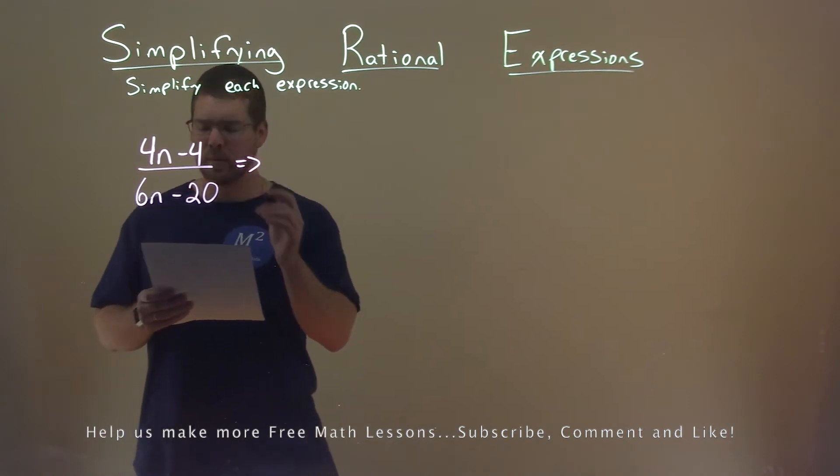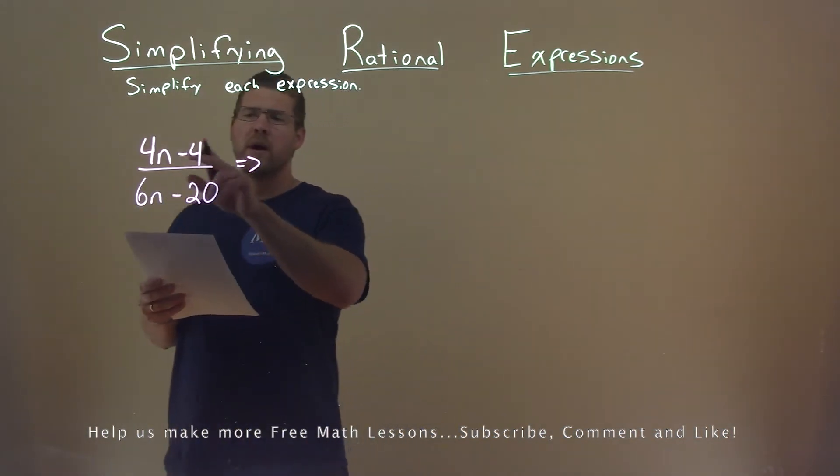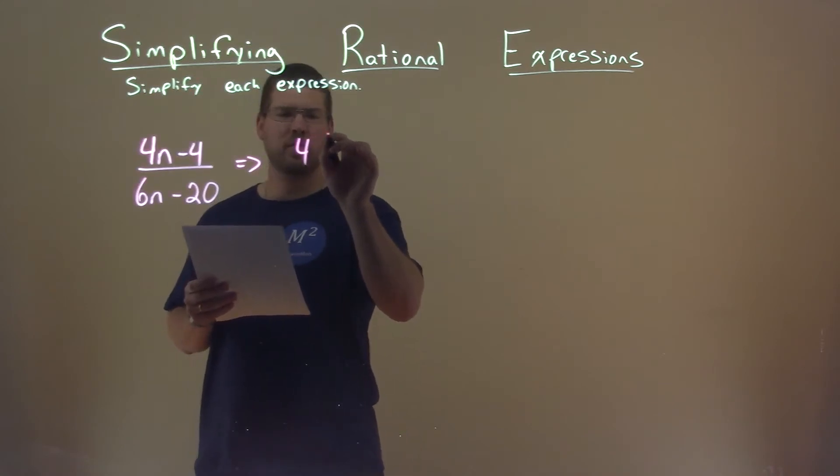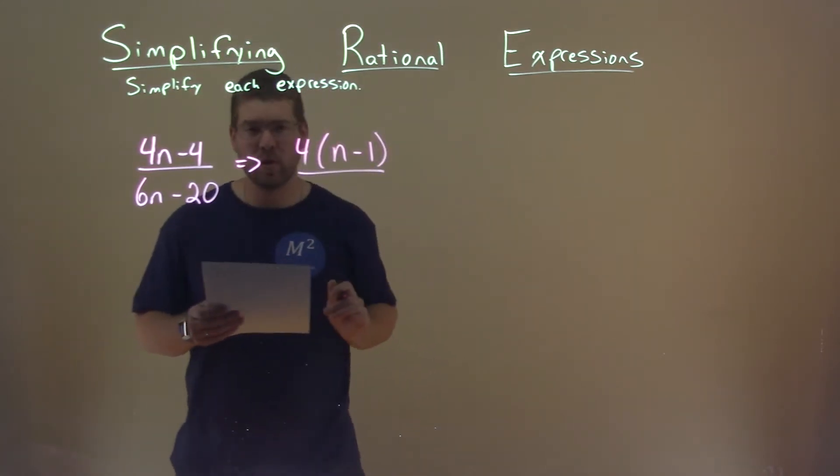There's something that we can pull out here. 4n minus 4 both have a 4 in it. So if I pull a 4 out, I'm left with an n minus 1 in the numerator.